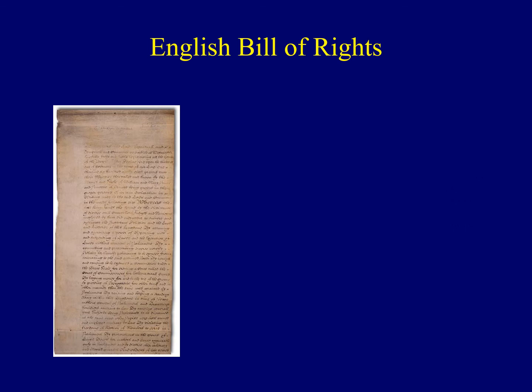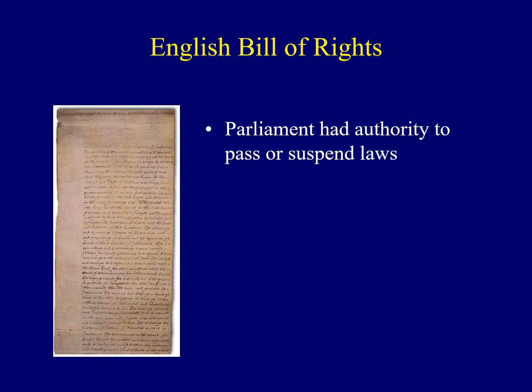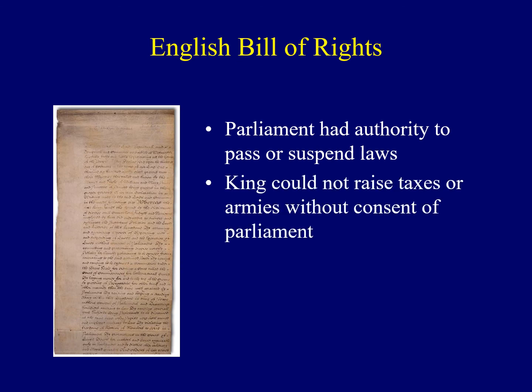Furthermore, Parliament required that both William and Mary accept limitations on their power in the form of a Bill of Rights. This had a range of provisions. First, Parliament asserted its authority to either pass or suspend laws — the king did not have the authority to do this. Second, the king couldn't raise taxes or raise armies without Parliament's consent. Lastly, it prohibited cruel and unusual punishment. The bottom line is that this further protected the rights of English citizens from the government overstepping its power and authority.